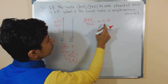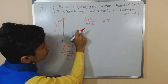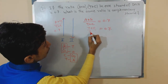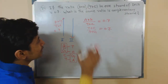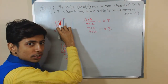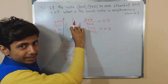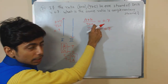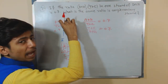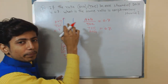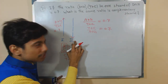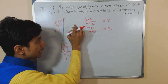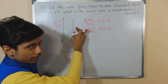If adenine plus guanine to thymine plus cytosine is 0.7 in this strand, in the opposite strand this ratio will be inverted. If adenine and guanine are higher in this strand, they will be lower in the opposite strand because both are purines. Adenine pairs with thymine and guanine pairs with cytosine. So if guanine is higher in this strand, cytosine will be higher in the second strand.